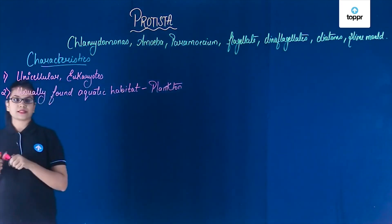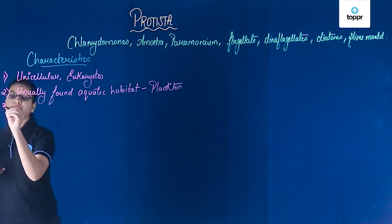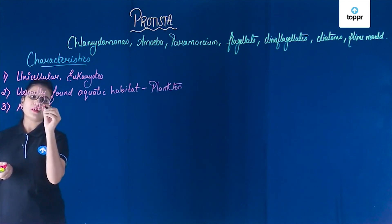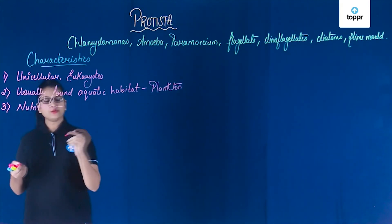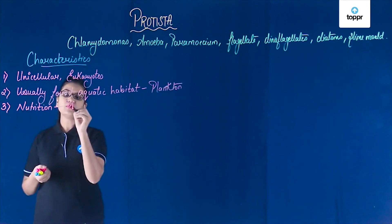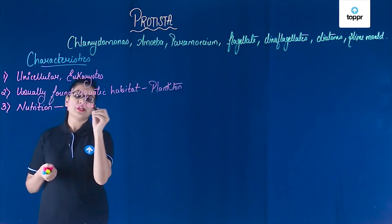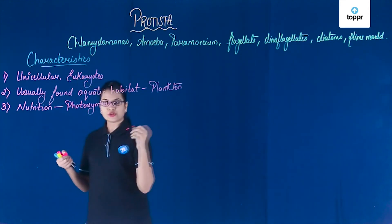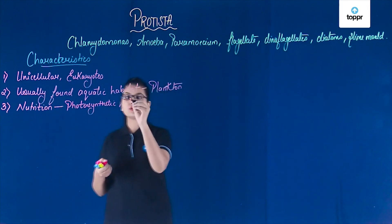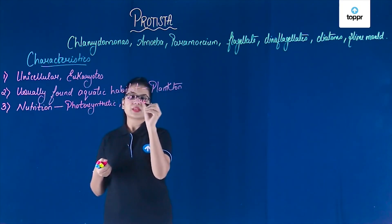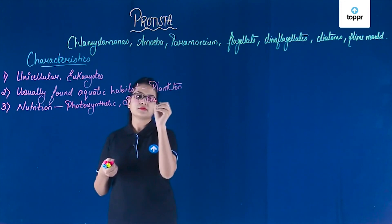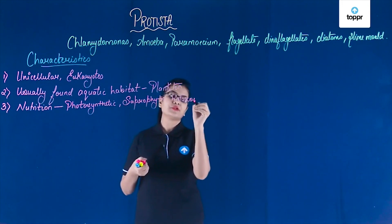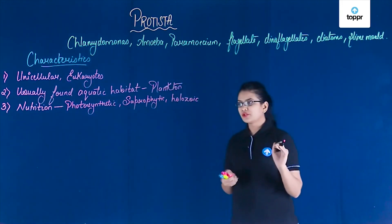Coming to the next characteristic, we will observe nutrition. Nutrition is very interesting in Protista because they perform all types of nutrition. They are photosynthetic, and at the same time they show heterotrophic modes of nutrition — they can be saprophytic and also show holozoic mode of nutrition.